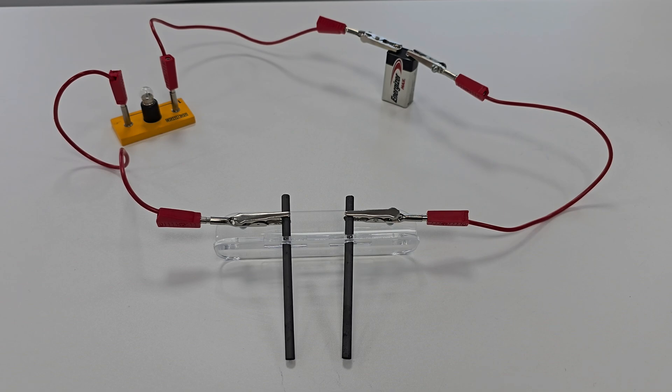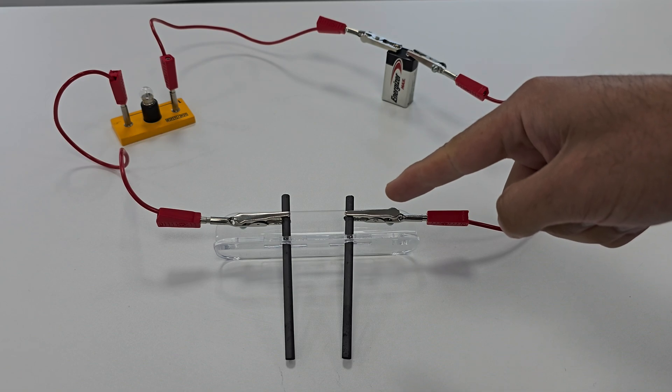For this experiment I've set up a simple circuit with a light bulb that lights up when a conductor completes the circuit. The circuit also includes graphite electrodes that will help us test our substances.